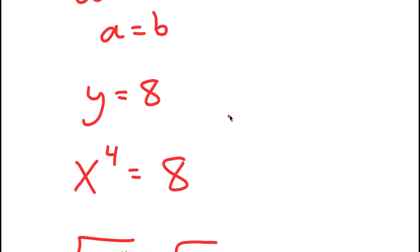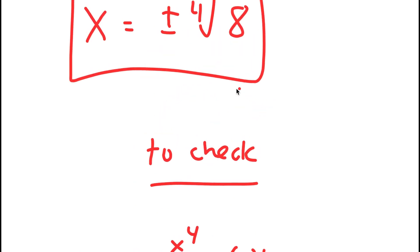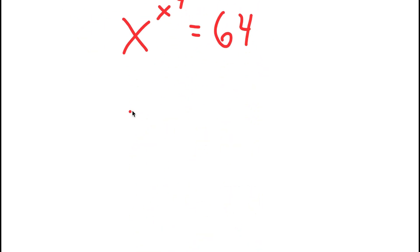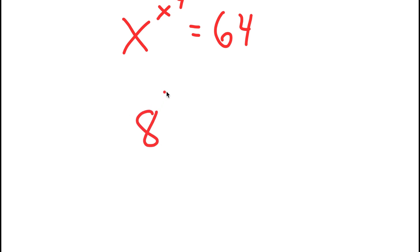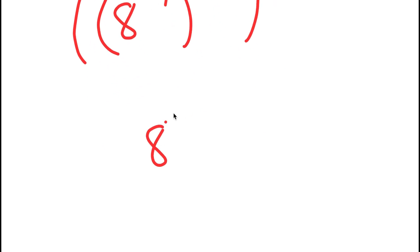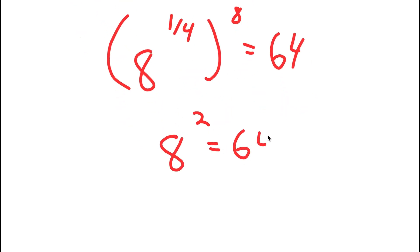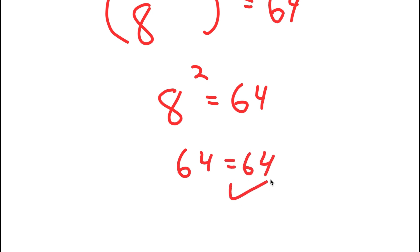The final thing to do is to check. My original equation was x to the power of x to the power of 4 is equal to 64, and we get x equals the 4th root of 8, which is 8 to the power of 1/4. Plugging this in: 8 to the power of 1/4 to the power of 8 to the power of 1/4 to the power of 4 — the 1/4 and 4 cancel out, giving 8 to the power of 1/4 to the power of 8. Then 8 times 1/4 is 2, so I get 8 to the power of 2 equals 64, and 64 equals 64. ✓